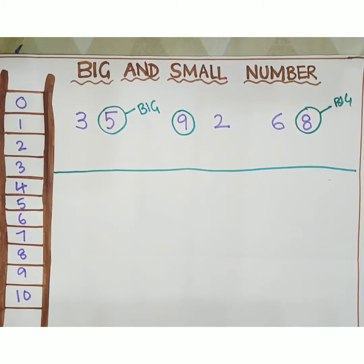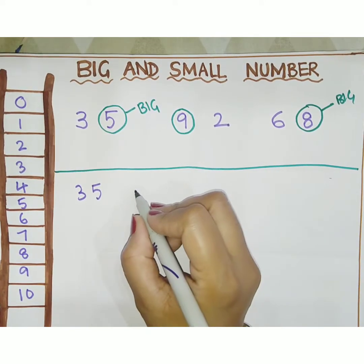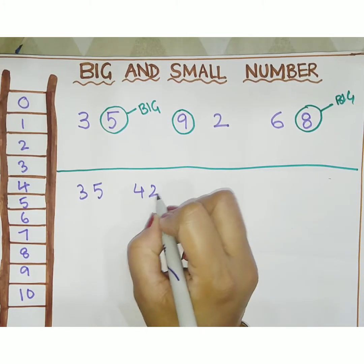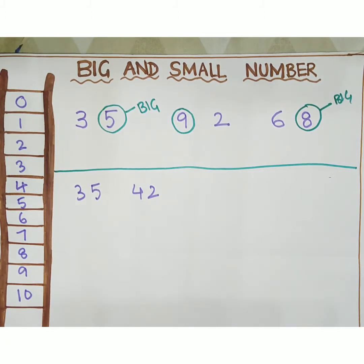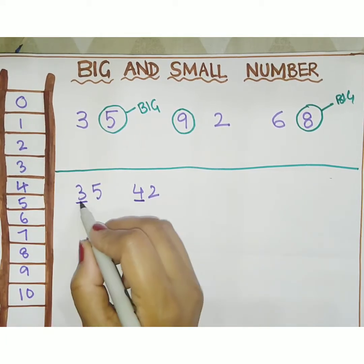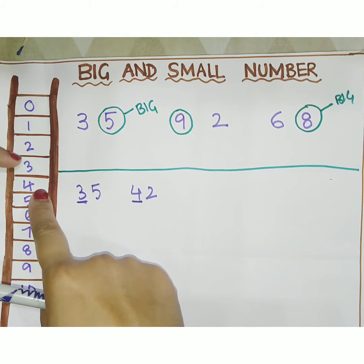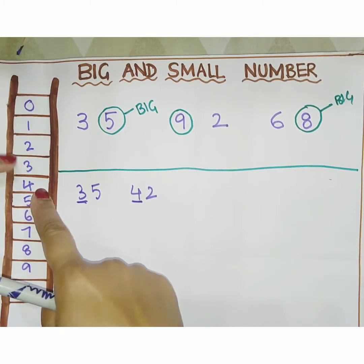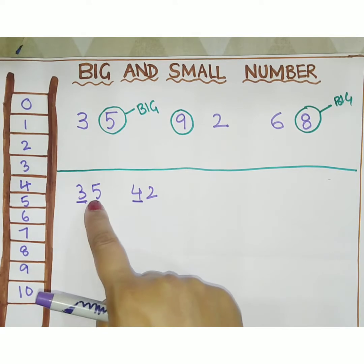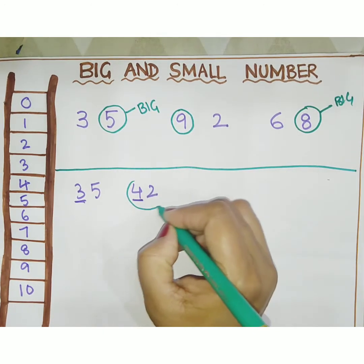Suppose we have a 2-digit number — what do you have to do? If the number is 35 and 42, we have to compare the first digit. 3 is here and 4 is here. After 0, which number comes first? 3 comes first. So 35 is the small number and 42 is the big number.